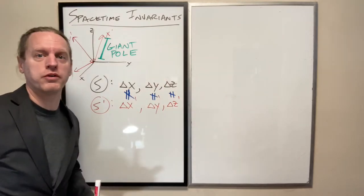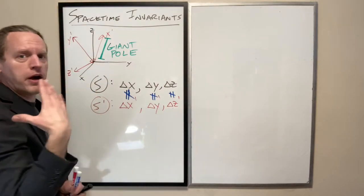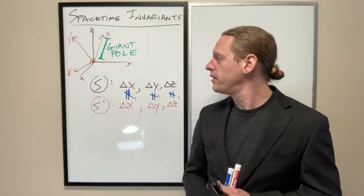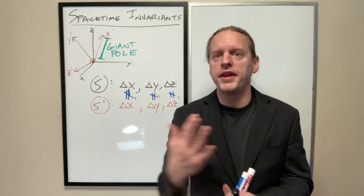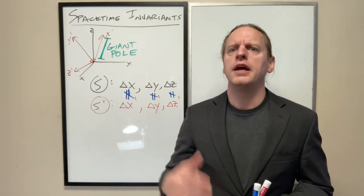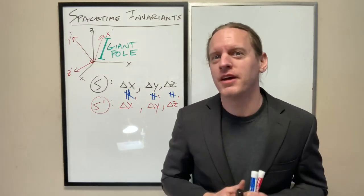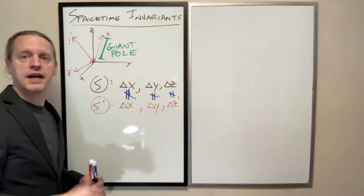Delta z will almost certainly not equal delta z prime. So their individual measurements, based on their alignment of their coordinate systems, necessarily causes them to disagree on their individual components. Is there something they would agree on? And hopefully you see, yes. It sure as hell better be the case that they both agree on the total length of the pole.